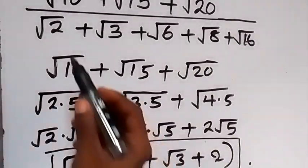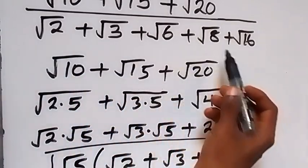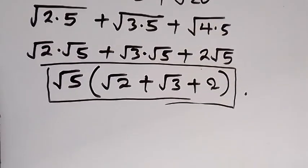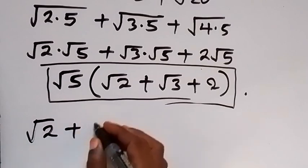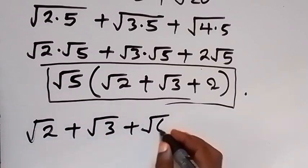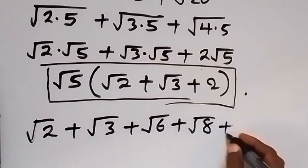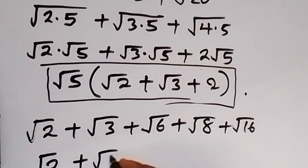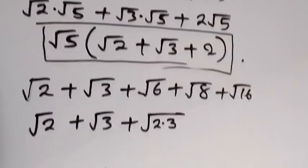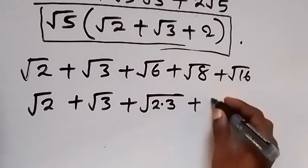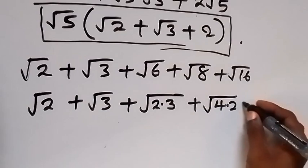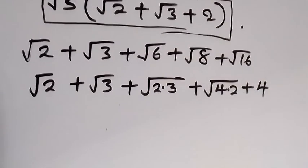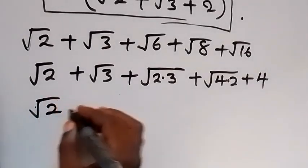From the denominator we have root 2 plus root 3 plus root 6 plus root 8 plus root 16. Root 6 stays, root 8 can be written as root 4 times 2, and root 16 is 4. When we simplify further we have root 2 plus root 3 plus root 6, plus root 4 times 2, plus 4.